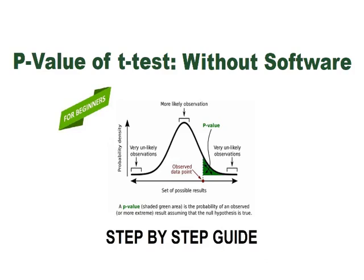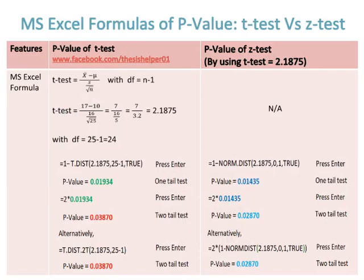P-value of t-test without software: step-by-step guide. MS Excel formulas of p-value, t-test versus z-test. The example of t-test is given by putting values in the mathematical formula of t-test. We get the value of t-test is equal to 2.1875.